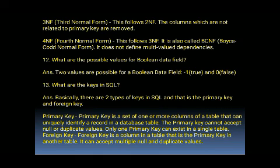The next question is: what are the possible values for a Boolean data field? Two values are possible for a Boolean data field — one, which means true, and zero, which means false.